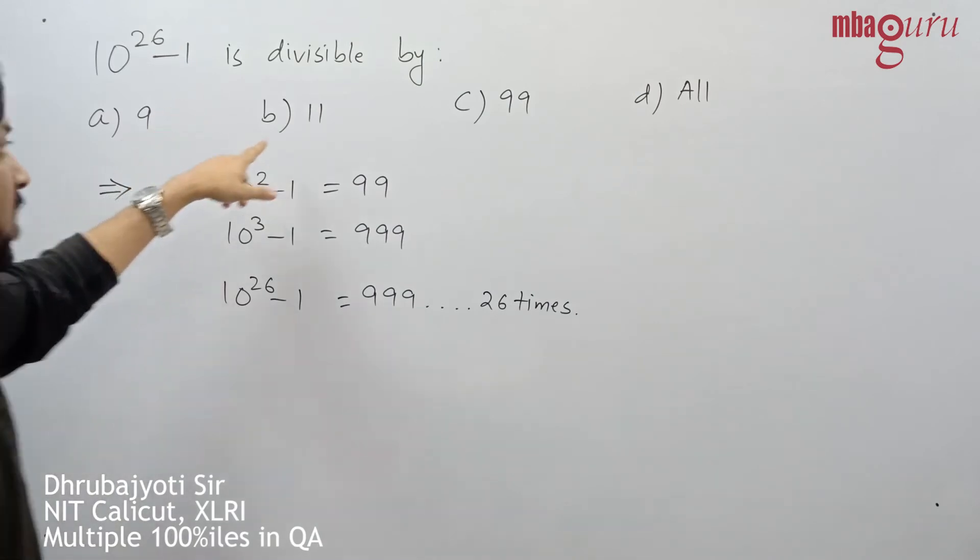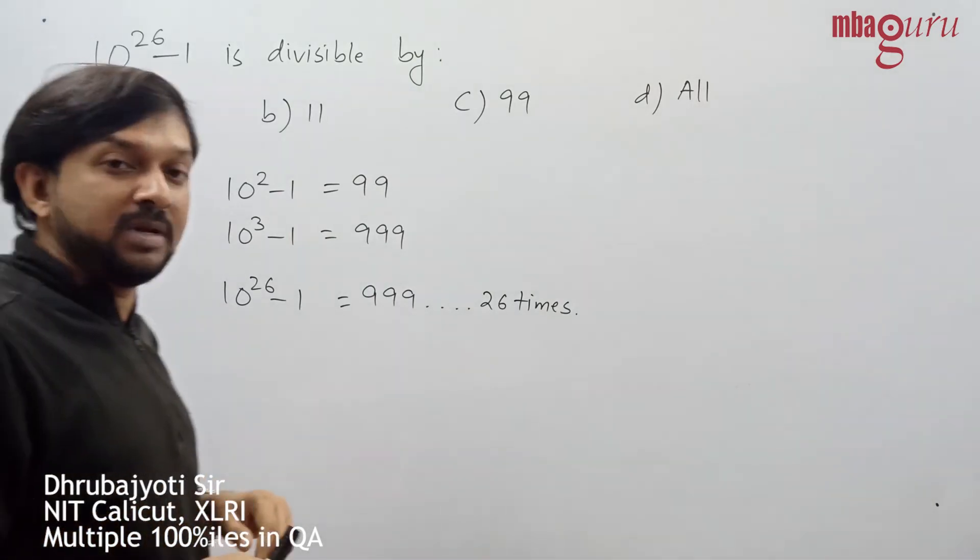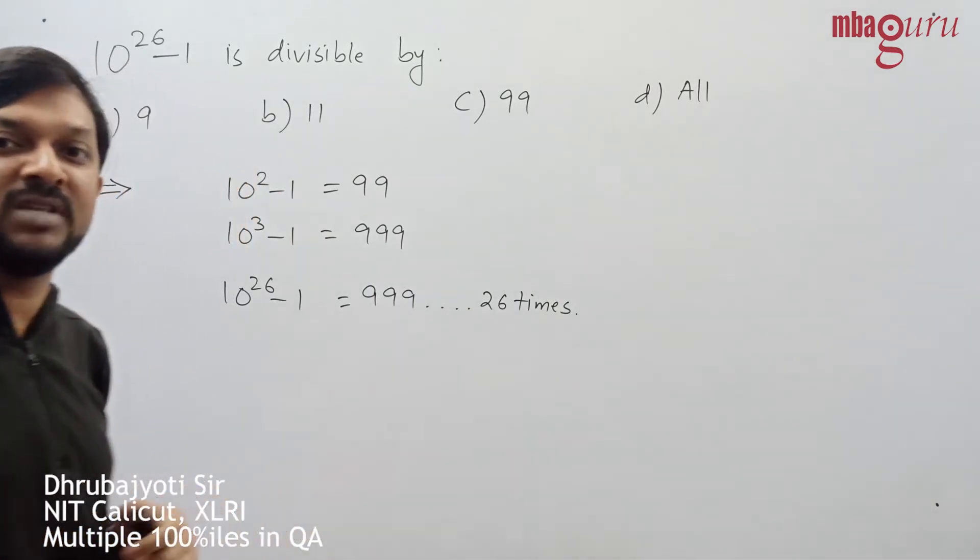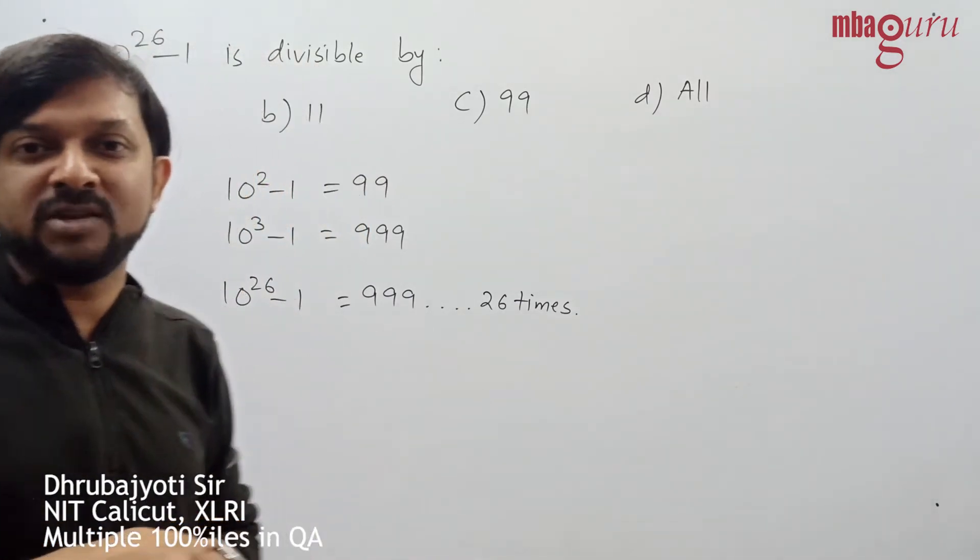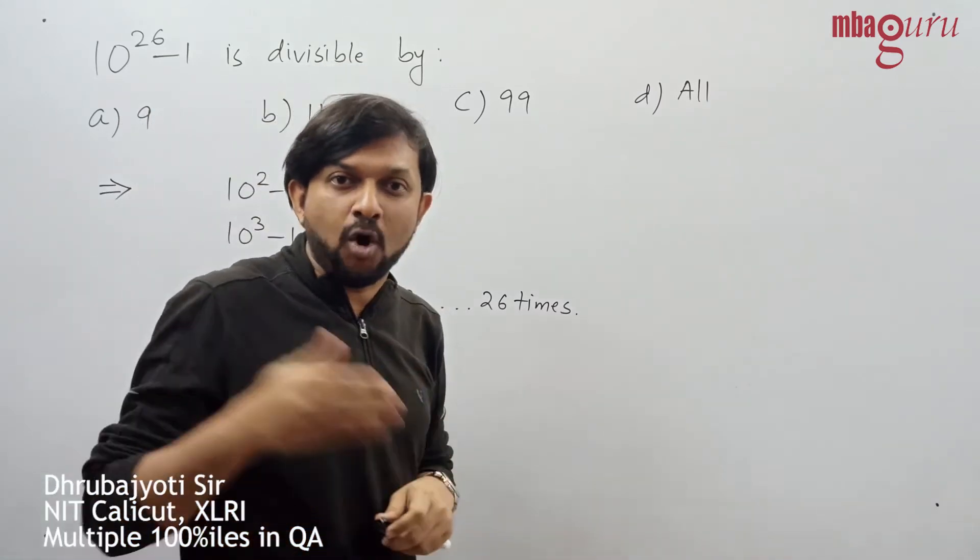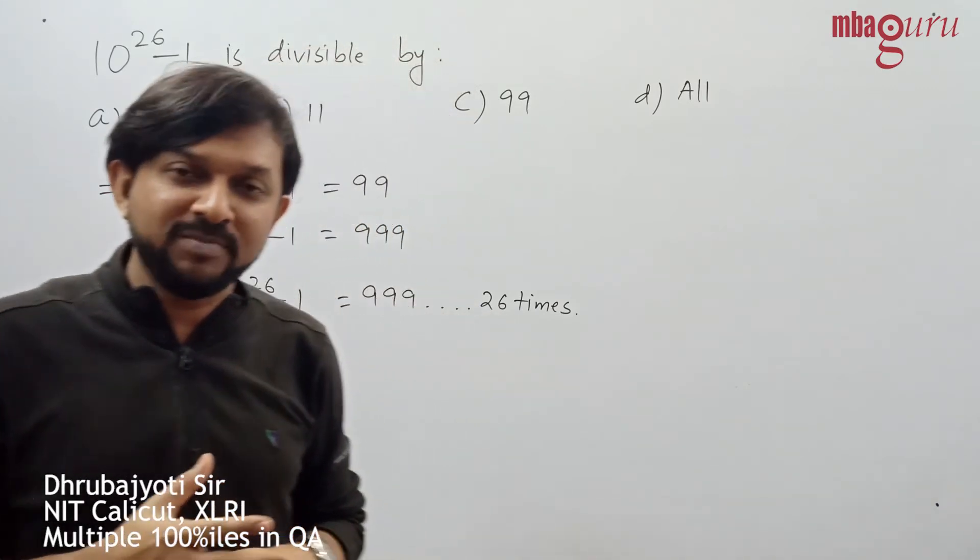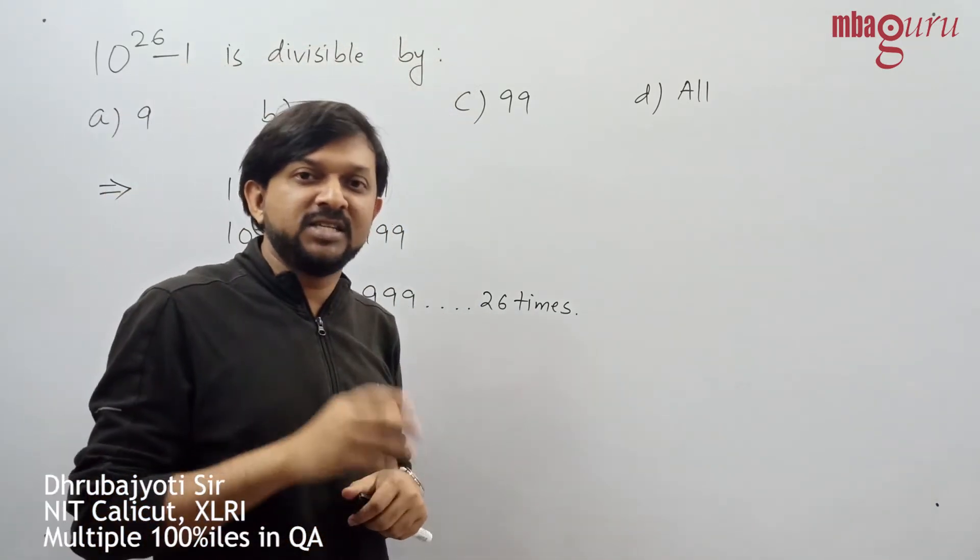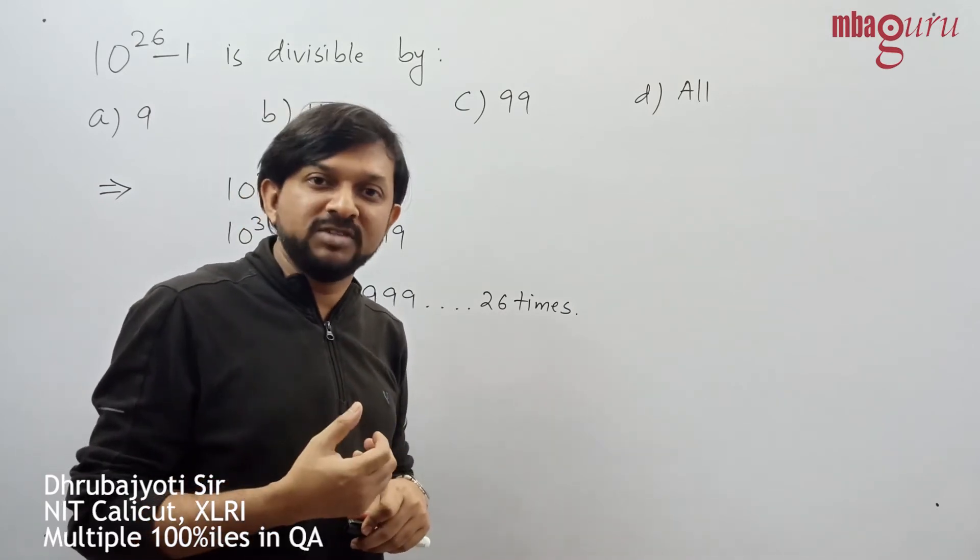But since there are options like 11, 99, and all of the above, I have to also check whether the number is divisible by 11. Let us remind ourselves of the divisibility rule of 11. We add up all the digits in the odd places, add up all the digits in the even places, and subtract one from the other. If the result is 0 or a multiple of 11, then the number is divisible by 11.